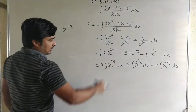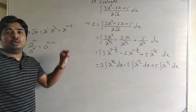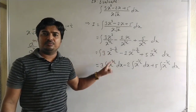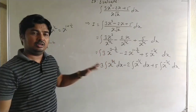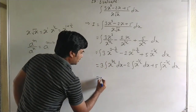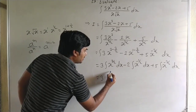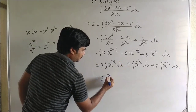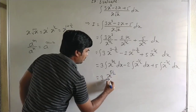All integrals are now in the form of x to the power n. We know that the integral of x to the power n is x to the power n plus 1 upon n plus 1. So here, 3 into x to the power 3 by 2 plus 1 — that is 5 by 2 — upon 5 by 2.